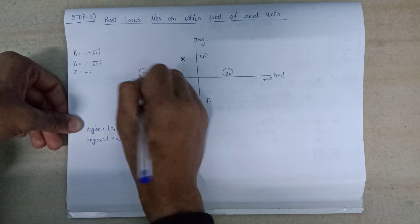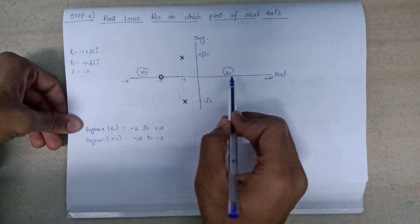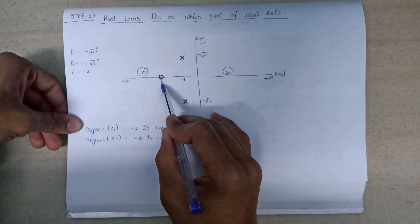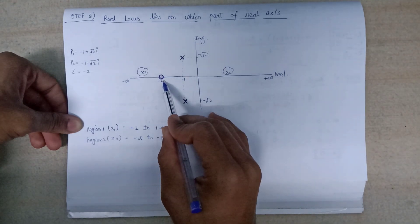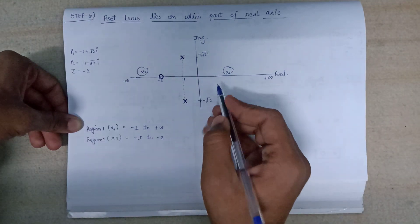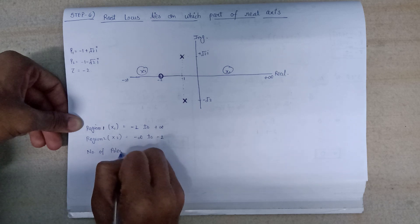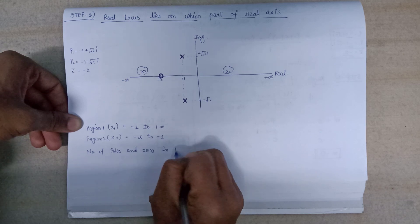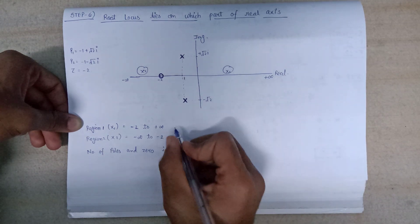For region x1, we need to count how many poles or zeros lie on the right-hand side of the zero at minus 2. No poles and zeros are on the right-hand side, so the number of poles or zeros in the right-hand side of x1 is equal to 0. That is why it is an invalid region.